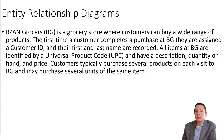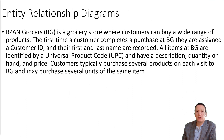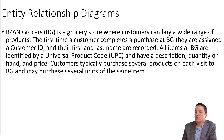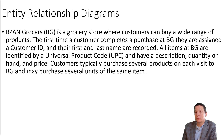So to give an example of how our ER diagrams work, we have a short vignette here that we're going to read. B-Zan Grocers is a grocery store where customers can buy a wide range of products. The first time a customer completes a purchase at BG, they are assigned a customer ID and their first name and last name are recorded in the database. All items at BG are identified by a UPC and have a description, quantity on hand, and price. Customers typically purchase several products on each visit to BG and may purchase several units of the same item. The approach that I like to take is to identify all of our entities and then the relationships between those entities.